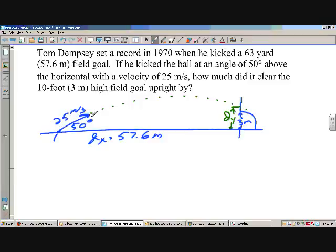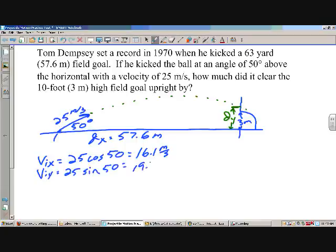The other thing to do is break up the initial velocity into the X and Y, which works out to be 25 cosine 50 in the X, 16.1 meters per second. And then the initial velocity in the Y is 25 times the sine of 50, which is 19.2 meters per second.